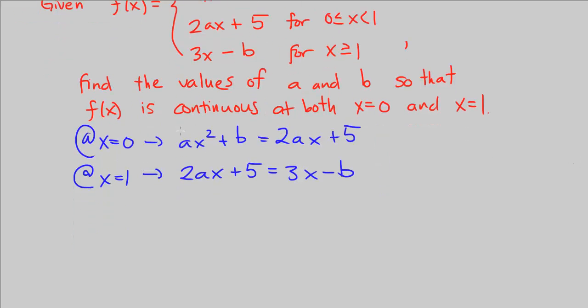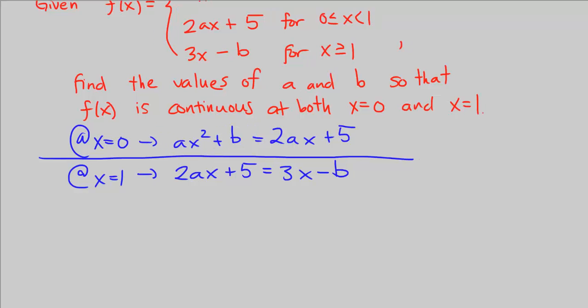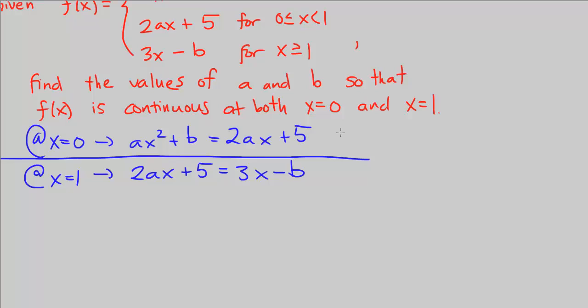The good thing here is that in the first equation we have x equals 0. So that's going to help us out a little bit because then we can rewrite ax squared plus b. We can go ahead and rewrite this because x is 0, so that's going to cancel out and we're just left with b on the left side. Equals 2 times ax. Well, x is 0, so that's just b equals 5. That was a lot easier than maybe you thought. We got b equals 5 just from the part where x is 0.